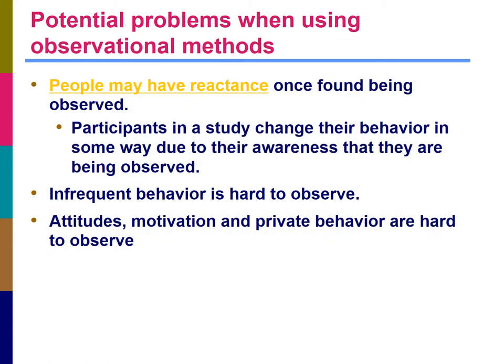On this slide, you can see a summary of the potential problems of the observational method. First, participants in a study may change their behavior in some ways due to their awareness that they are being observed, so the observational data may be contaminated to a certain degree. Second, if the behavior a manager is interested in occurs very infrequently, then the observational method is very time-consuming to use.